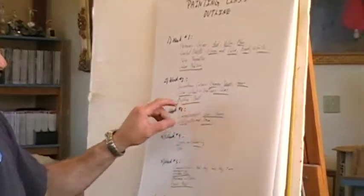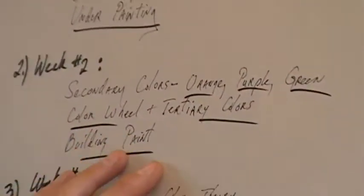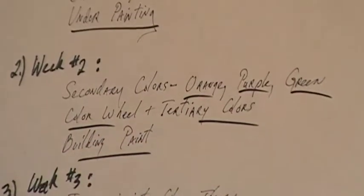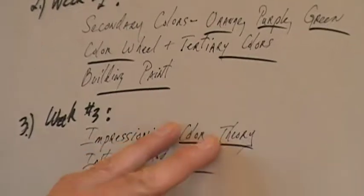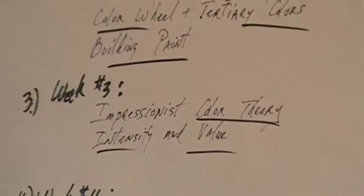And then for the rest of the course, the second week we're going to talk about secondary colors and tertiary colors and building paint up on your little still life. Third week we'll talk about impressions, color theory, intensity, and value.